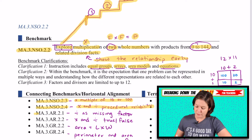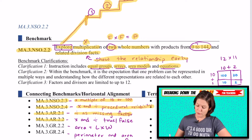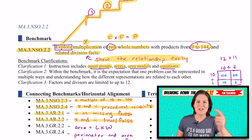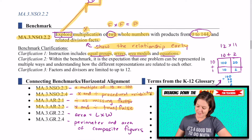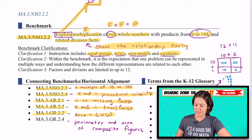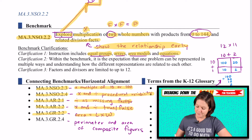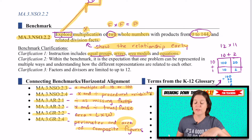We also have 3.AR.2.1 — division as a missing factor. 3.AR.2.2 — multiplication and division true or false equations. And we have 3.GR.2.2, which is area — the formula, length times width. We're multiplying there. Another example is perimeter and area of composite figures, mostly with area.